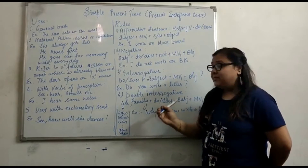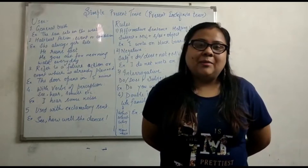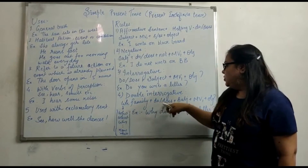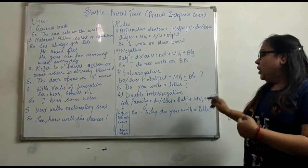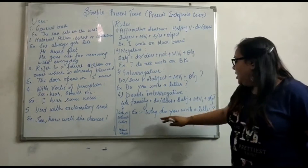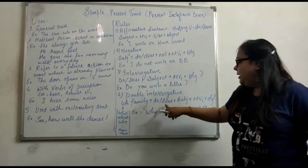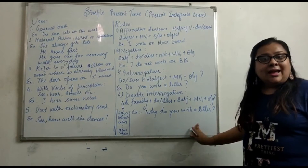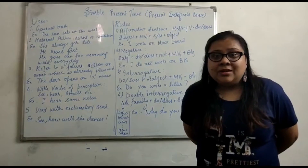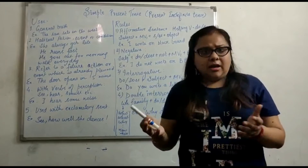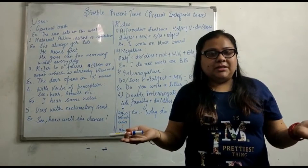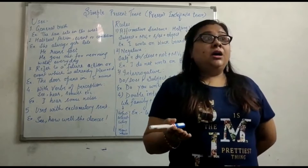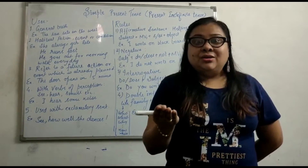Double interrogative includes the WH family along with the same rule. So: WH word plus do/does plus subject plus main verb first form and object. For example: Why do you write a letter? — 'Why' comes from the WH family. Other examples: Why does she cry? What does he do?